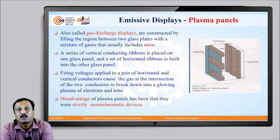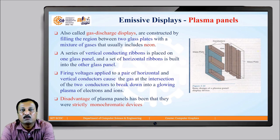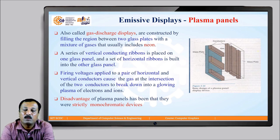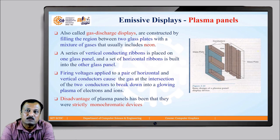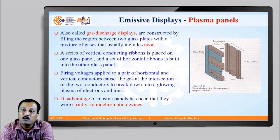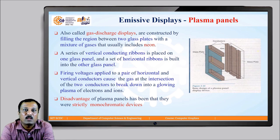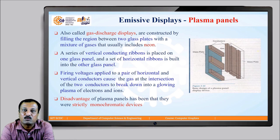Let us study the technology of each one of these display devices using emissive technology. The first type is the plasma panel display device, also called a gas discharge display device, which is constructed by filling the region between two glass plates with a mixture of gases that usually include neon.